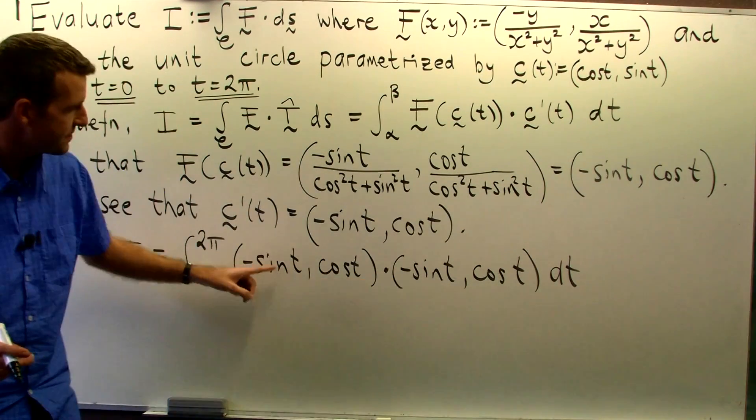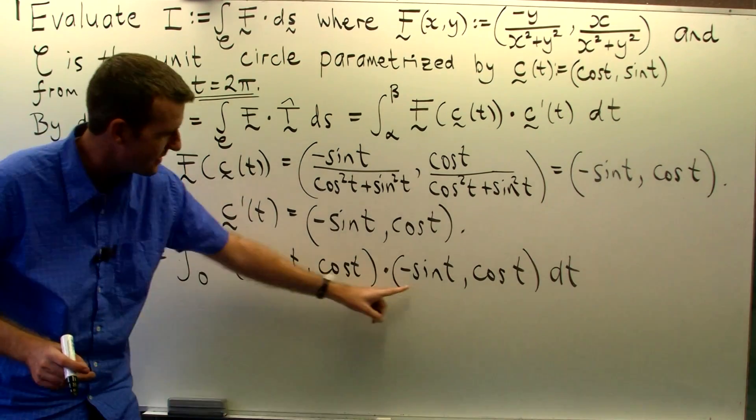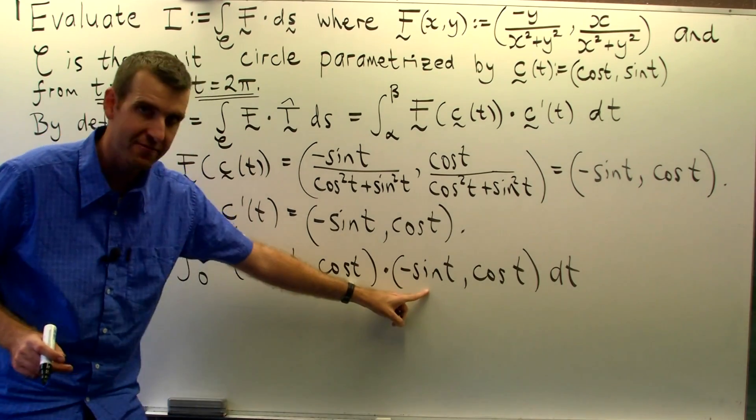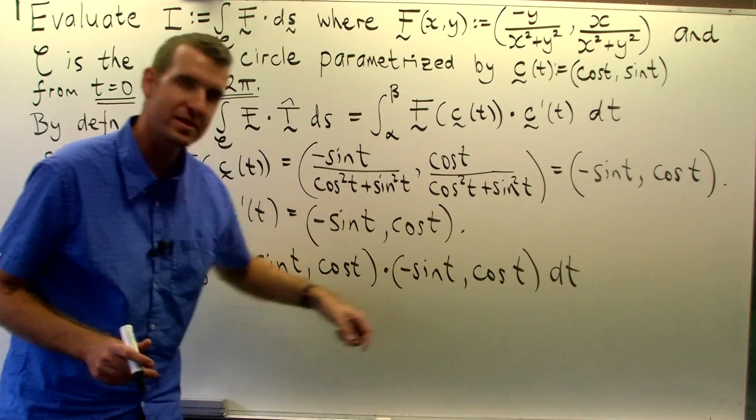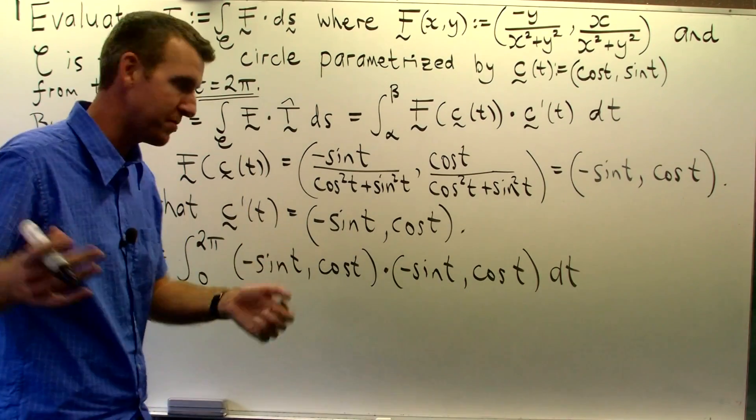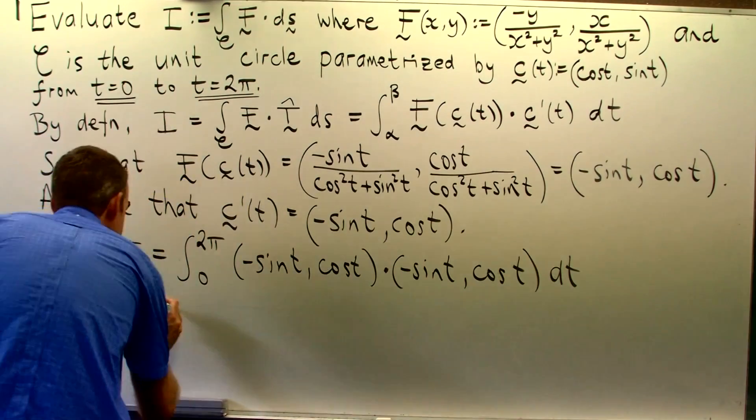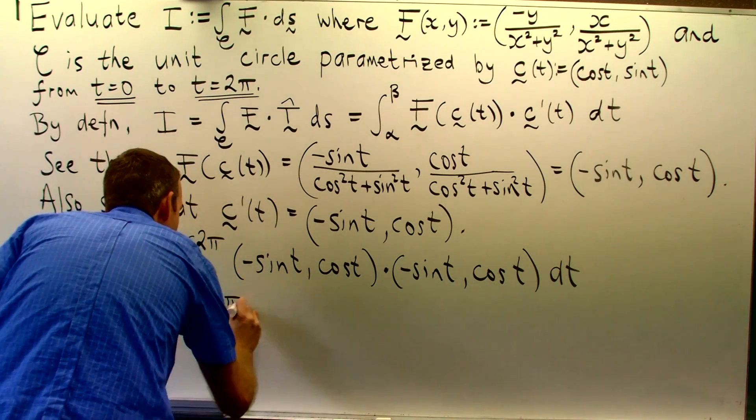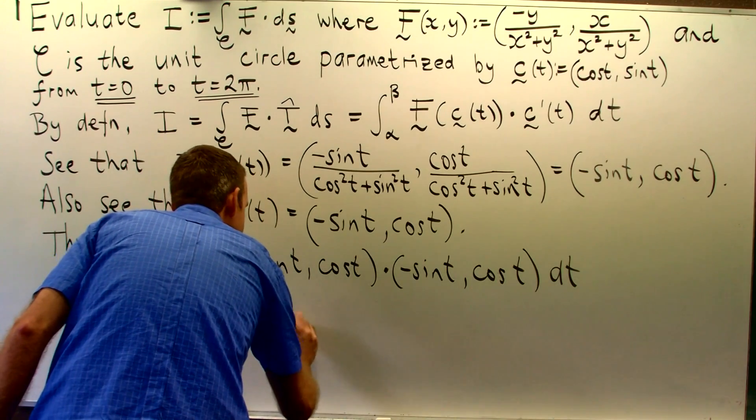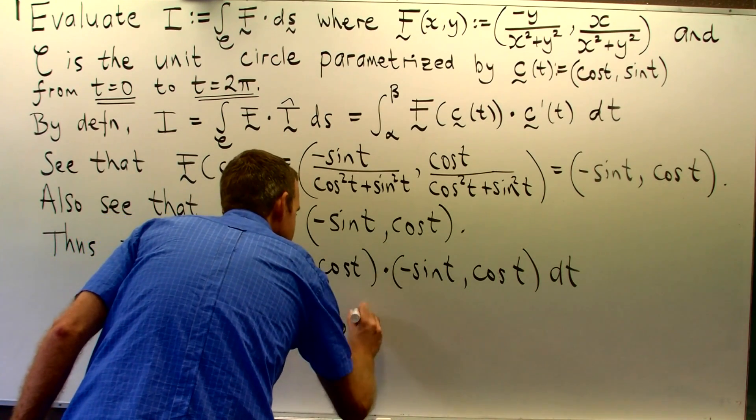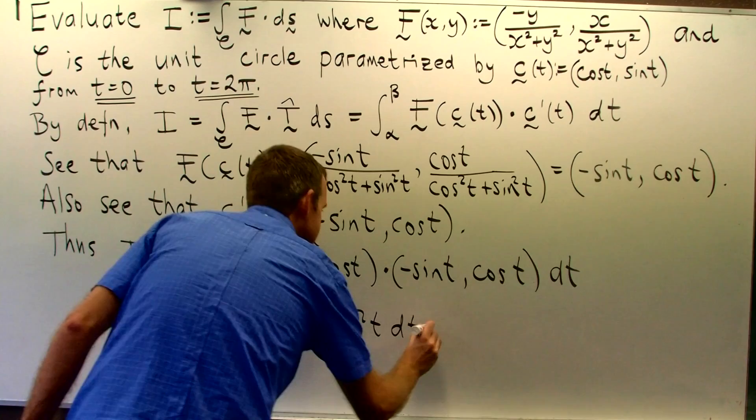So if we expand this out, remember the dot product, you just take the first component, multiply it by the first component, take the second component, multiply it by the second component and add up all the parts. So here we're actually going to get sin squared t plus cos squared t dt.